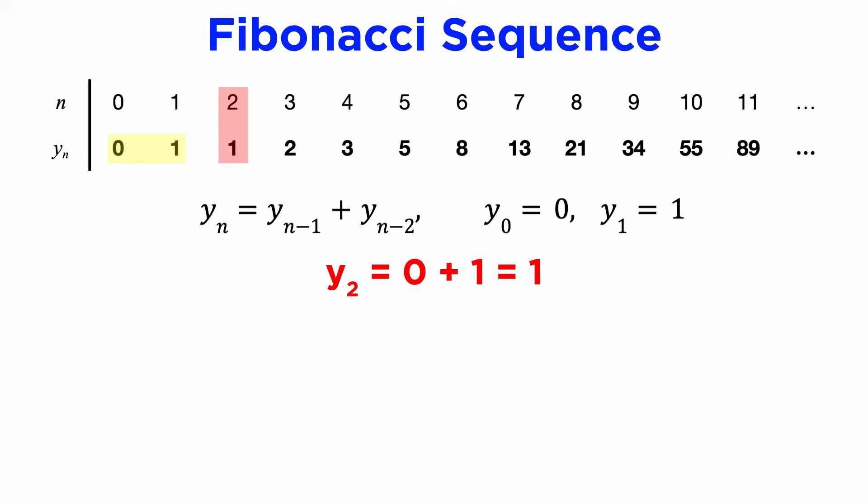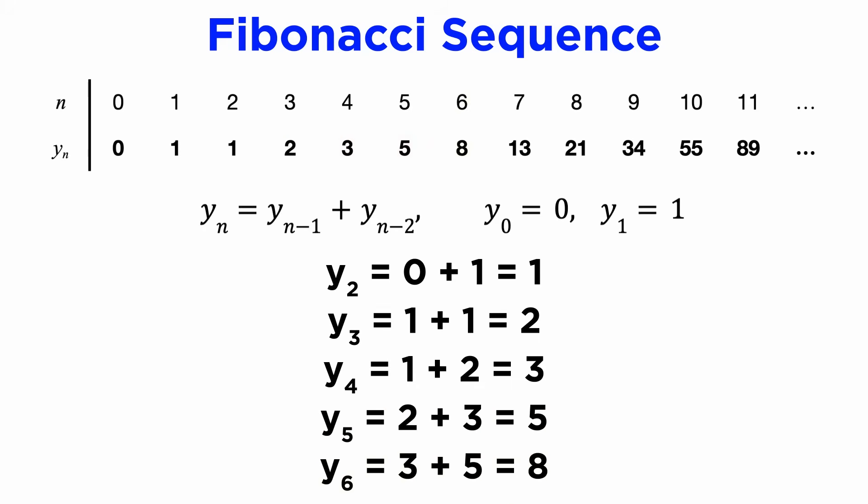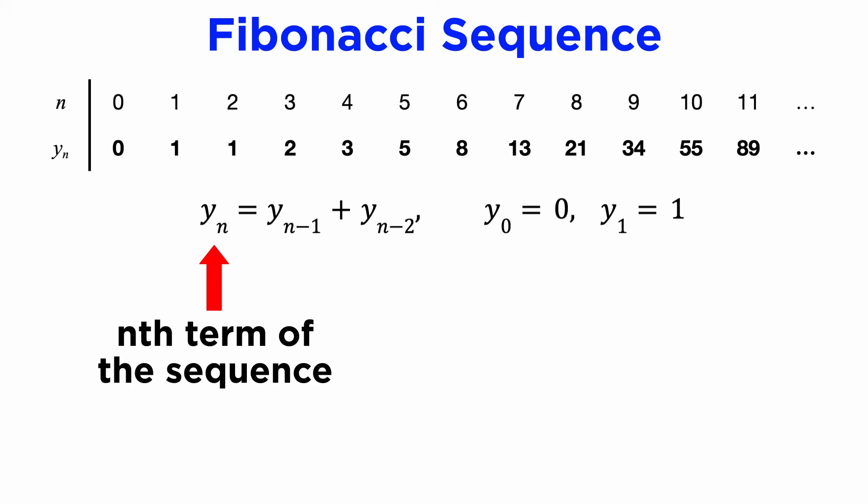So to compute the rest of the sequence, we take our first two terms and add them to get 1, then again to get 2, then 3, 5, 8, and so on. If we denote the nth term of this sequence as y sub n, then we can write down a relationship between the terms to define the sequence. We get y sub n equals y sub n minus 1 plus y sub n minus 2, with initial conditions y sub 0 is 0 and y sub 1 is 1.